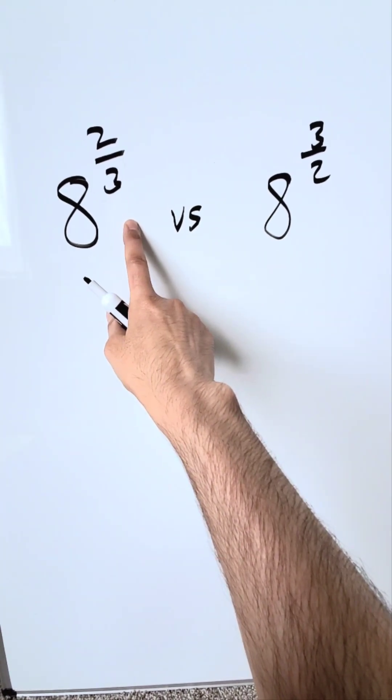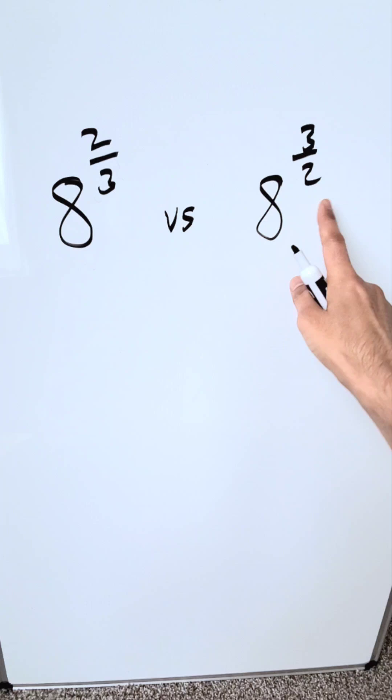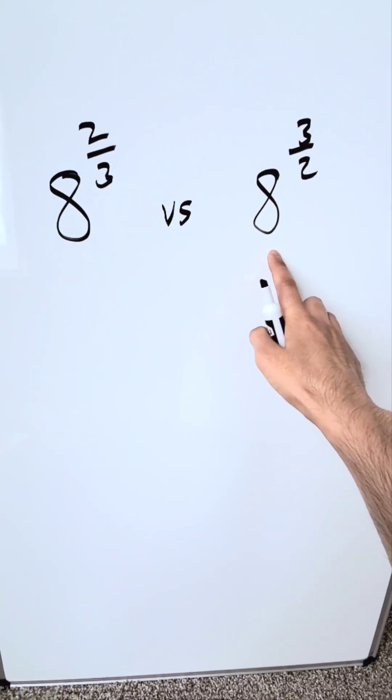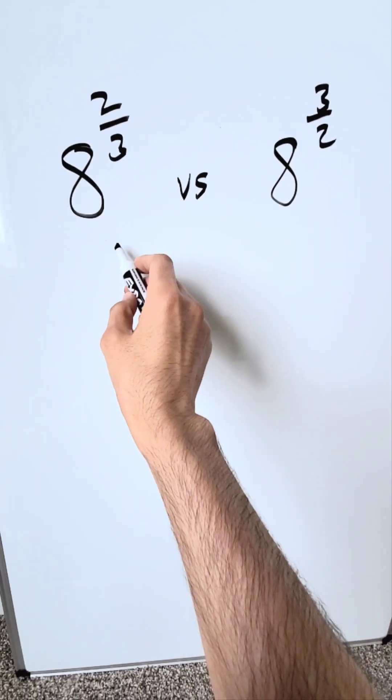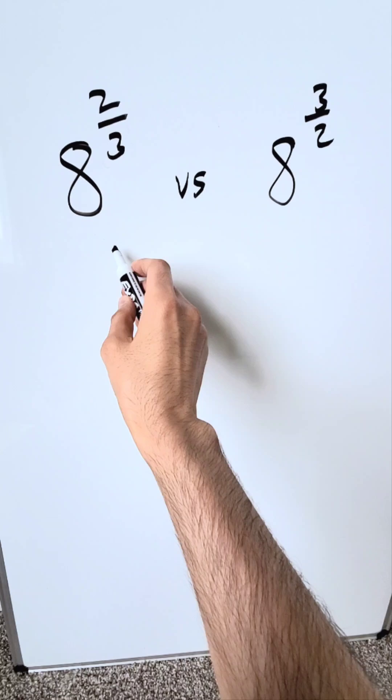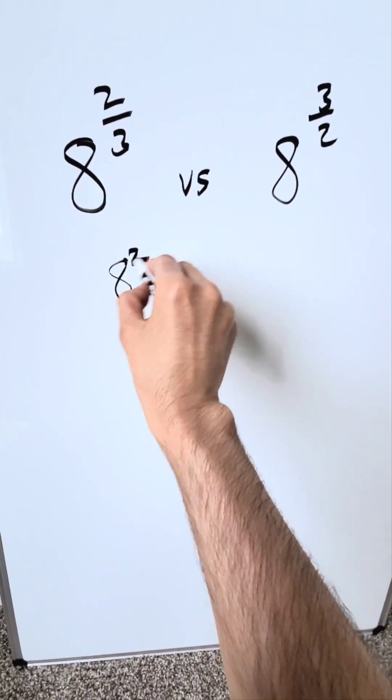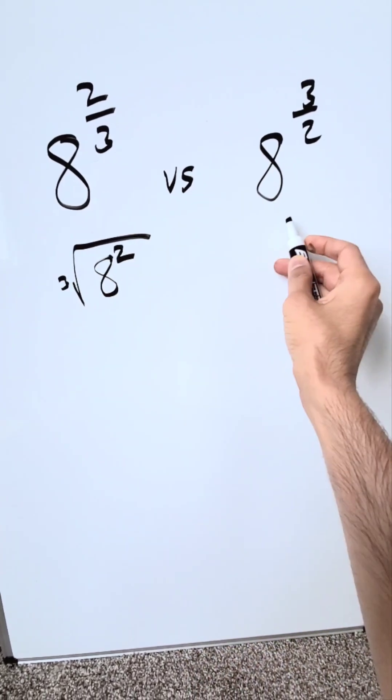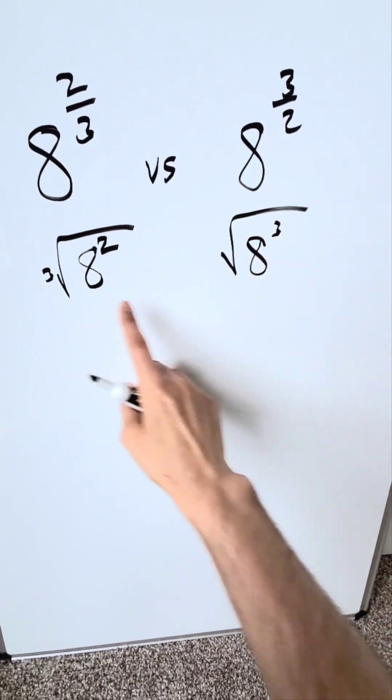This one right here is looking at a cube root and you have a perfect cube. This is looking at a square root but you don't have a perfect square. If you were to write these using your laws of exponents and radicals, you're looking at 8 square but you're looking at a cube root. Here you're looking at an 8 cube but you're looking at a square root.